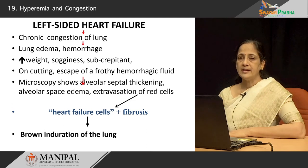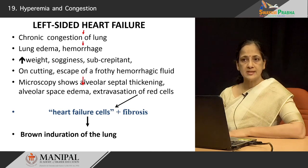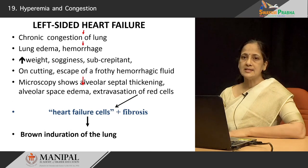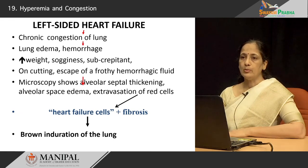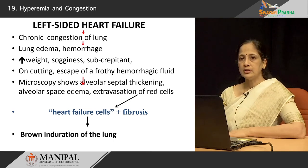There is venous stagnation. As a result of increased hydrostatic pressure in the inter-alveolar septae, fluid will escape into the septa and the alveolar spaces. So pulmonary edema will occur, as well as haemorrhages due to rupture of some of the smaller vessels. The lung as a whole will increase in weight, it will become soggy and have a subcrepitant texture. When we cut such lungs, a lot of frothy hemorrhagic fluid will escape from the cut surface.